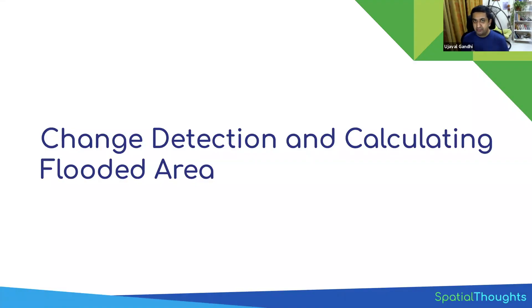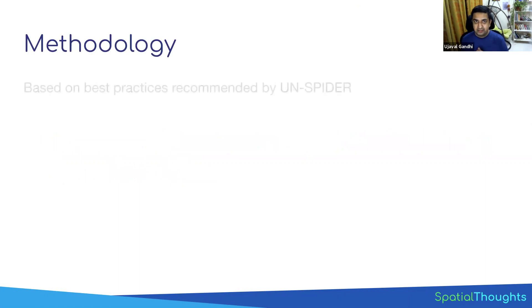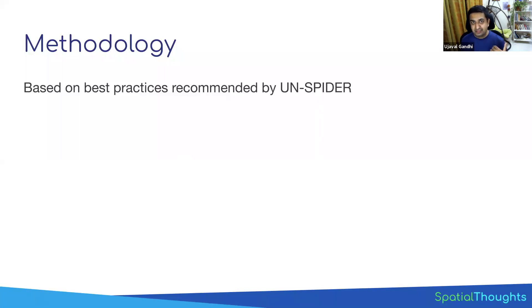Now we can visually see it, but how do we actually detect and identify the pixels and calculate the flooded area? We'll be following a methodology recommended by the UN SPIDER program, which is the disaster management program. They have a well-tested methodology, and the script I'm going to show has been verified in multiple flood events by people on the ground and gives good results. I've linked to the UN SPIDER document in the resources section.